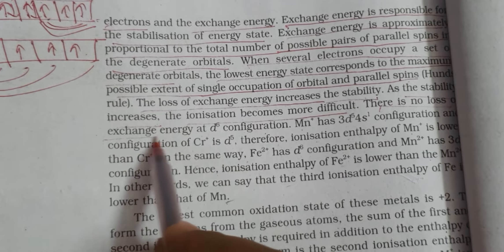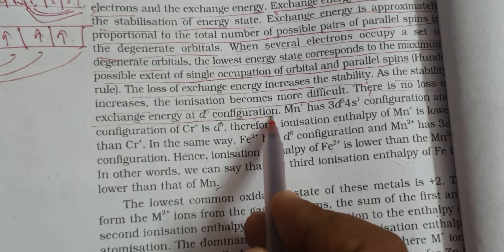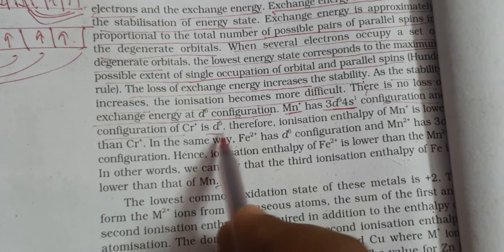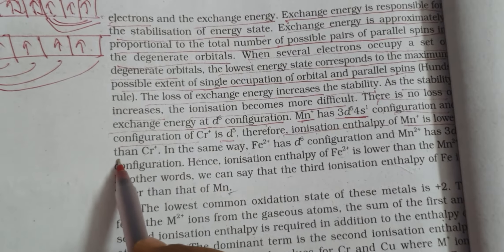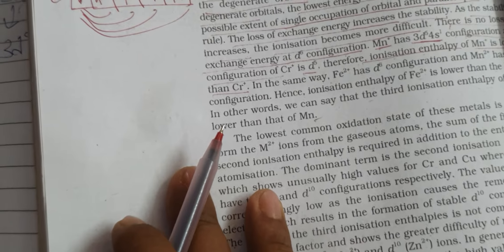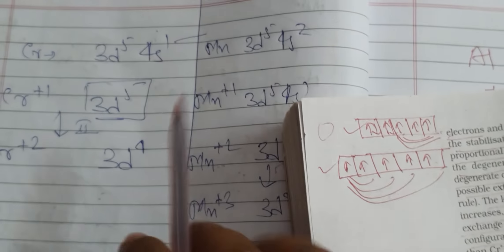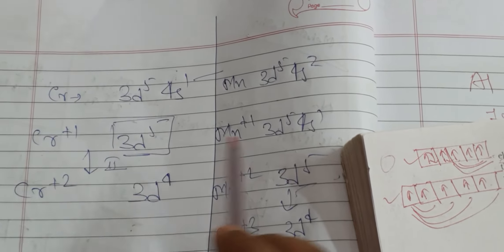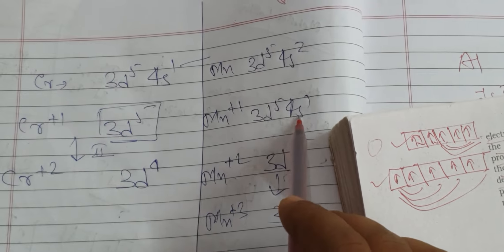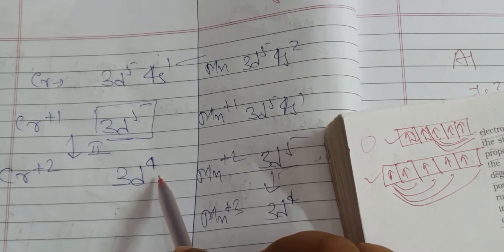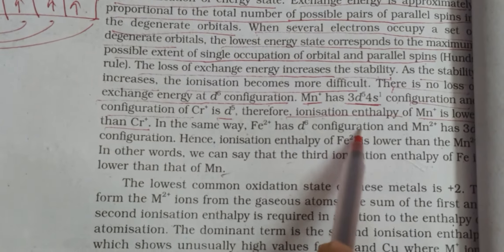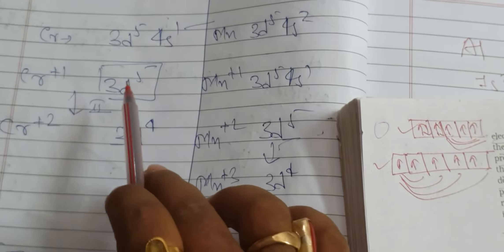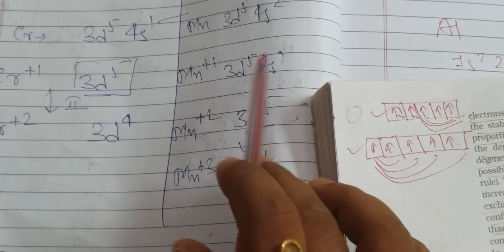There is no loss of exchange energy at the d⁶ configuration. Mn⁺ has a 3d⁵ 4s¹ configuration and Cr⁺ has a 3d⁵ configuration. Therefore, the ionization enthalpy of Mn⁺ is lower than that of Cr⁺. When Mn²⁺ is formed, the transition is from 3d⁵ to 3d⁴, whereas Cr⁺ retains 3d⁵. So the ionization enthalpy of Mn⁺ will actually become more than that of Cr⁺.